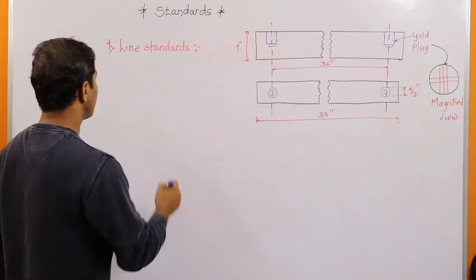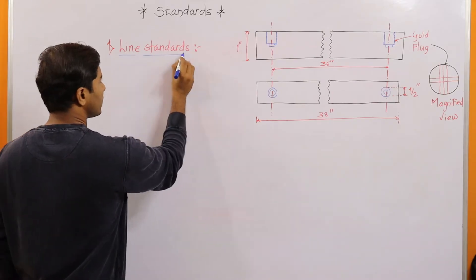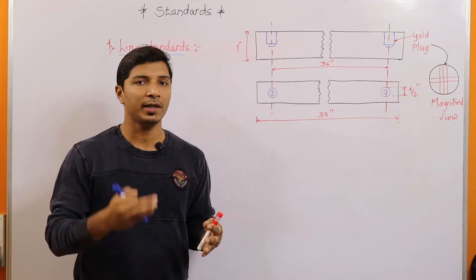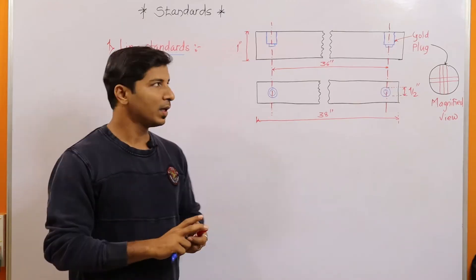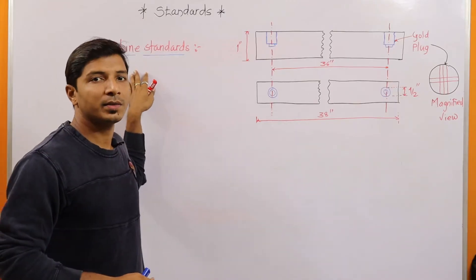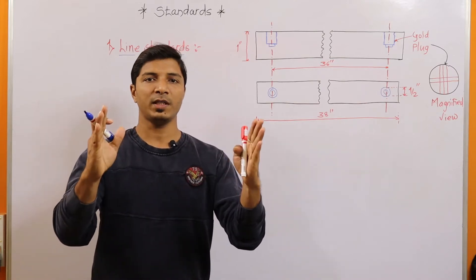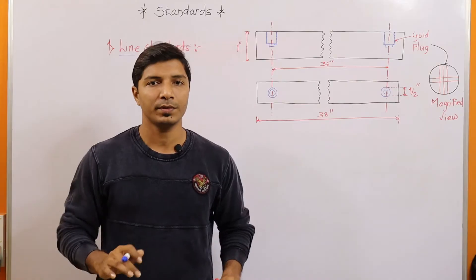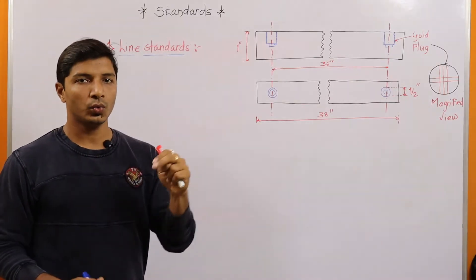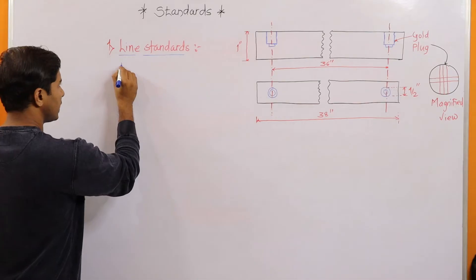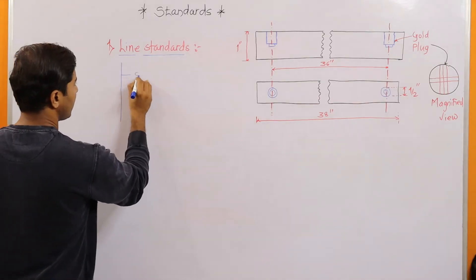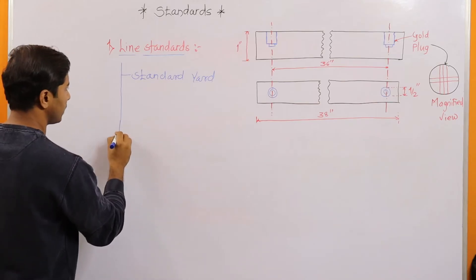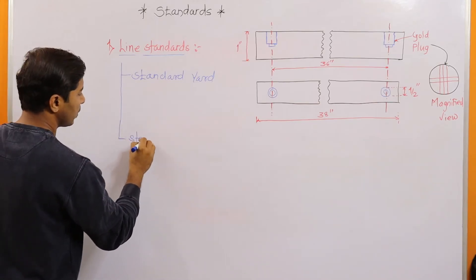The first type of standards are line standards. These standards are used to manufacture instruments that can be used in linear measurements, such as length. According to line standards, two lines are specified and the distance between these two lines or two ends is a standard distance. Line standards have two subtypes: the standard yard and the standard meter.